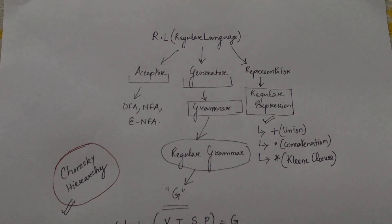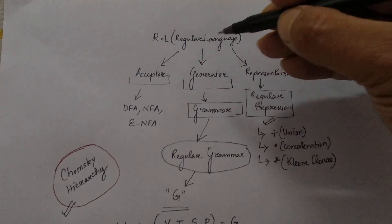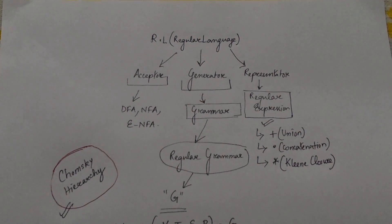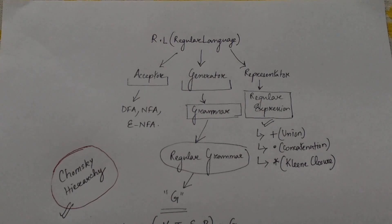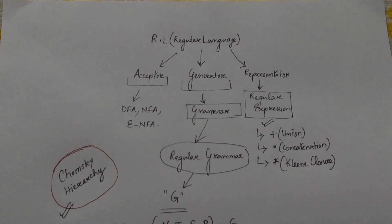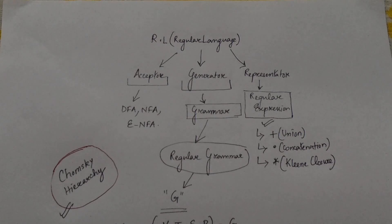Before starting with the grammar topic, let's look at what regular language says. Regular language is divided into three parts: acceptor, generator, and representator. The acceptor accepts a particular set of strings based on certain machines like DFA, NFA, and epsilon-NFA. These are the machines which generally accept a particular set of strings.